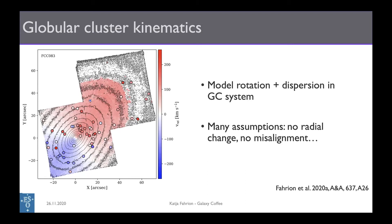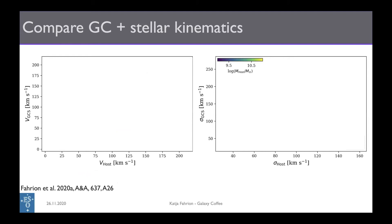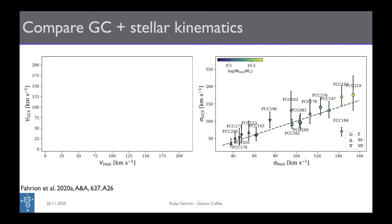It's a simple model, but we can directly compare galaxies to their globular clusters. The result is shown here: on the left-hand side, the rotation velocity of the globular cluster systems versus the host galaxy, and on the right-hand side, the globular cluster velocity dispersion.